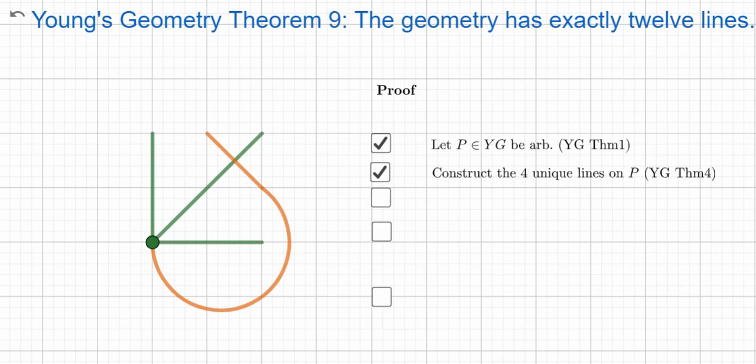We're going to do this for the other eight, so we've created four lines on nine different points. Four times nine, we have 36.